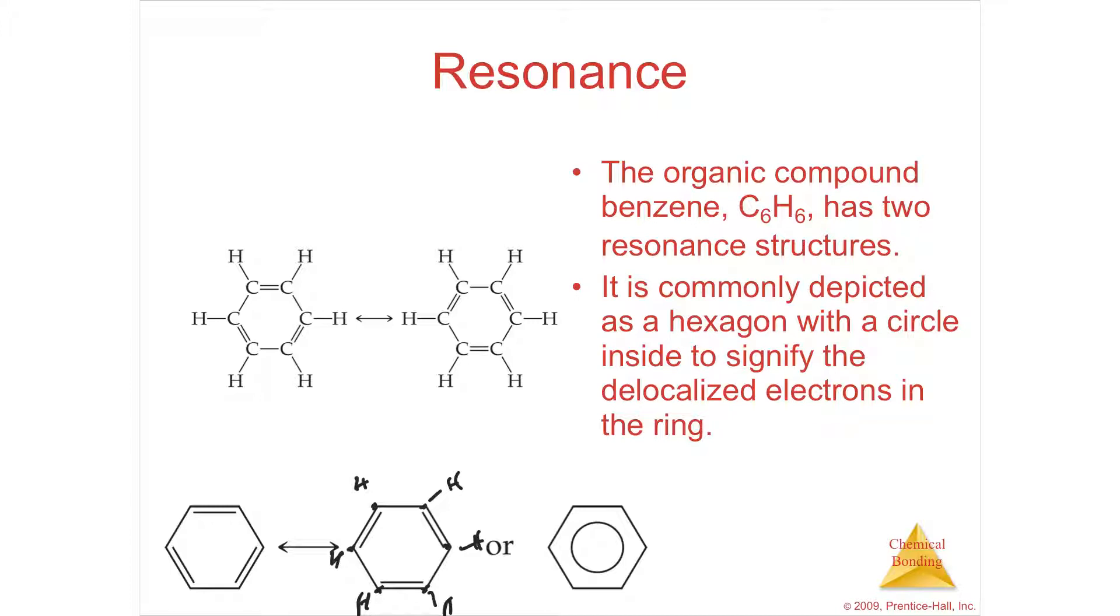In between every other one, you're going to get a double bond. If you number these one, two, three, four, five, six, the double bonds on the right are two, four, and six. The double bonds on the left are one, three, and five. So they're simply in different places.